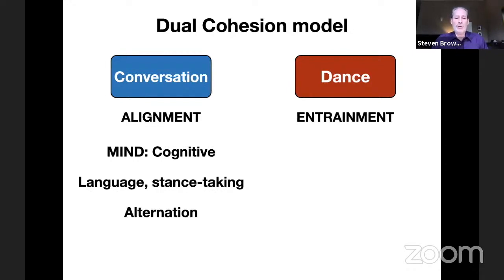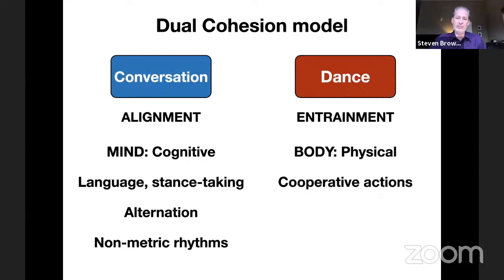From a performative standpoint, this proceeds through alternation—the famous turn-taking that occurs during conversation. From a rhythmic standpoint, these rhythms are very irregular, non-metric. This stands in contrast to the other mechanism of entrainment, for which dance will be the prototype in this talk. This is much more the domain of physical actions, including cooperative joint actions.